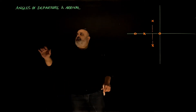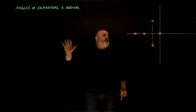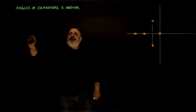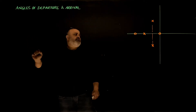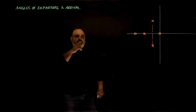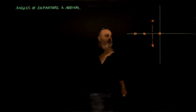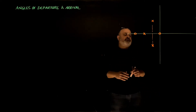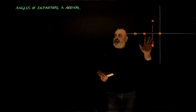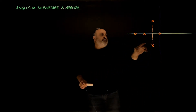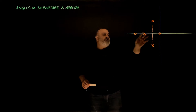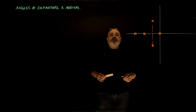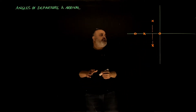Let's discuss the angles of departure and arrival. In a root locus, let's assume that we have a system represented by three poles and two zeros.